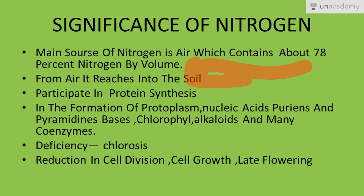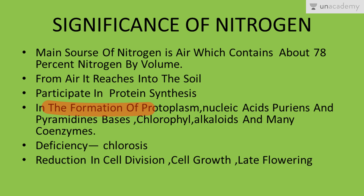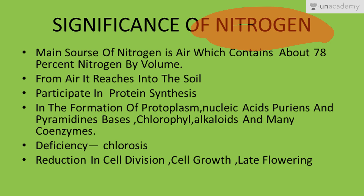Let's look at the importance of nitrogen in plants. First, it is involved in the synthesis of proteins. Secondly, it is involved in the formation of protoplasm, nucleic acids, purines, pyrimidine bases, chlorophyll, alkaloids, and many coenzymes. A deficiency of nitrogen may cause chlorosis — the yellowing of leaves.